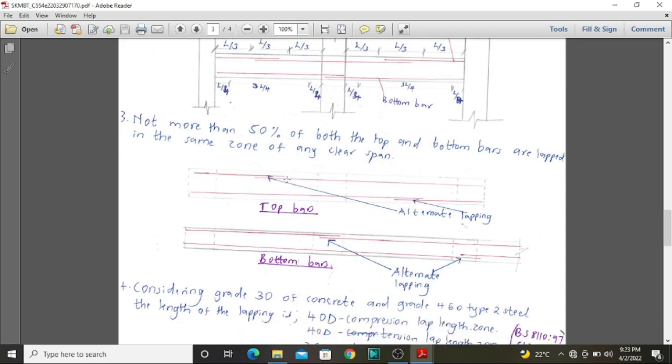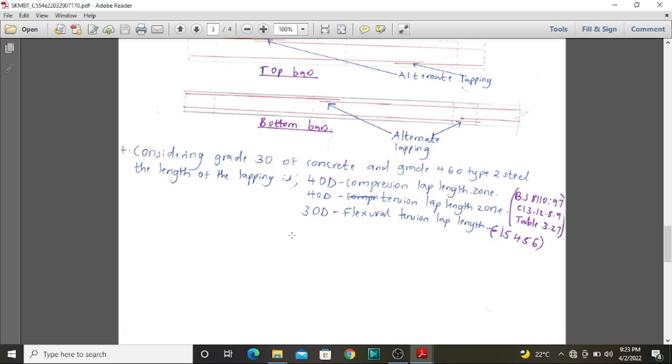The fourth is that whenever we are considering grade 30 of concrete and grade 460 type 2 of steel, the lapping length is supposed to be 40 multiplied by the diameter for compression lap length and for tension lap length. This is according to British Standard 8.1.10, the 1997 version, and the table to consider this from East Table 3.27.